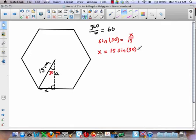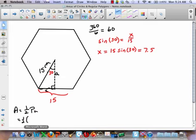Now if x is 7.5, what does that make the whole side length? 15. Ah, now we're getting somewhere. Because remember we said that area is one half pa. So what's my perimeter? 15 times 6. 15 times 6, which is? 90. All right, we've got two thirds.